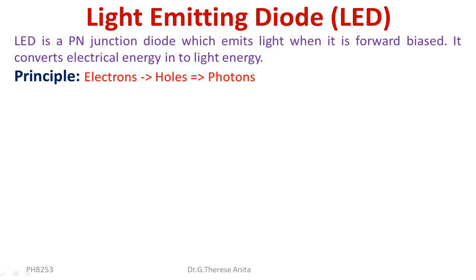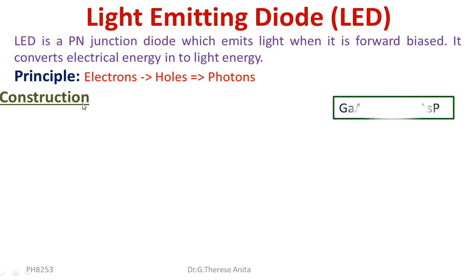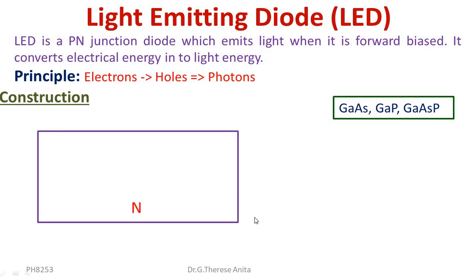Now, construction. Gallium arsenide, gallium phosphate, and gallium arsenide phosphate are used to construct LED. An N-type layer is grown on a substrate, and a P-type layer is deposited on it by diffusion.